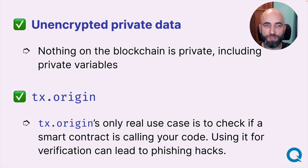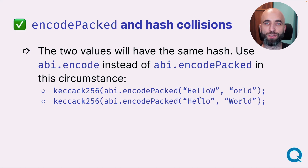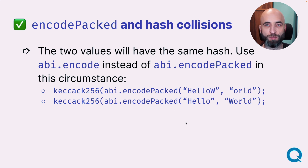The next important point is to practically never use tx.origin. The only real use case is to check if a smart contract is calling your code — don't use it for anything else, and don't use it to verify the source of a transaction, as it can lead to phishing attacks. Also be careful with ABI encodePacked and hash collisions — two different values when encoded with encodePacked can produce the same hash, so it's better to use ABI encode instead.